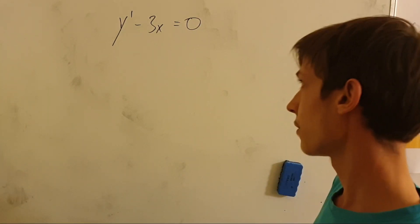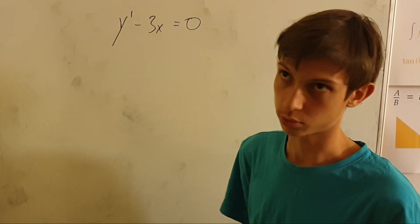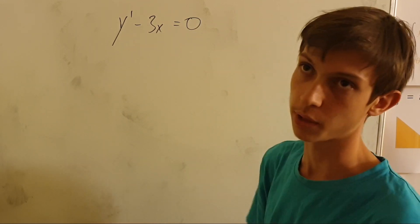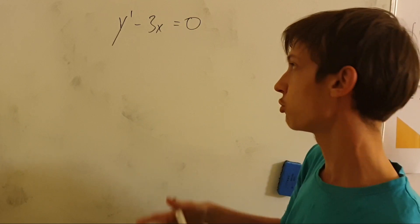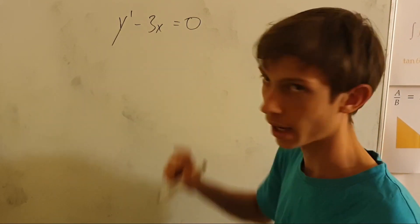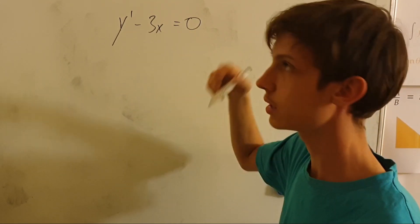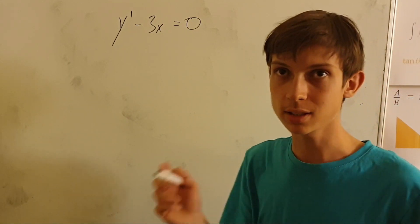Sometimes we're faced with differential equations that are actually not that hard to solve, and this one is an example. We have y', which is the derivative of some function with respect to x, minus 3x, and on the right side it equals zero. Why is this quite easy to solve?